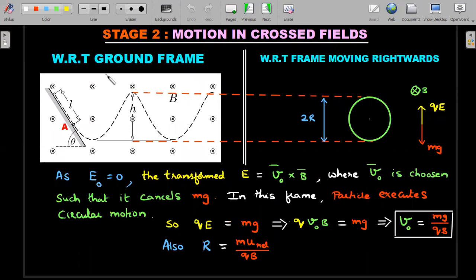With respect to ground frame, the person has seen a cycloidal path after it loses contact. What I'll do in order to ensure this cycloidal path can be converted to a circular path, we need to ensure that the gravitational field is cancelled.